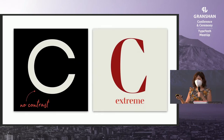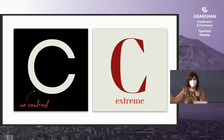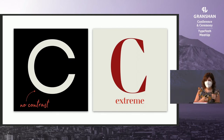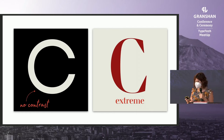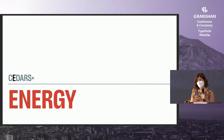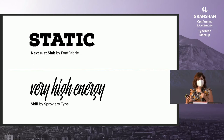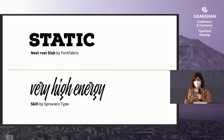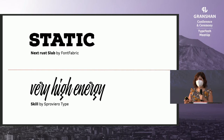Here you can see only the extreme variations — the really high contrast and the really low contrast or none, with steps in the middle. Another axis is the energy. I get the feeling that we don't speak enough about energy within type design, but it's something very important when we're trying to understand what's happening within a typeface. We can go from static to very high energy.